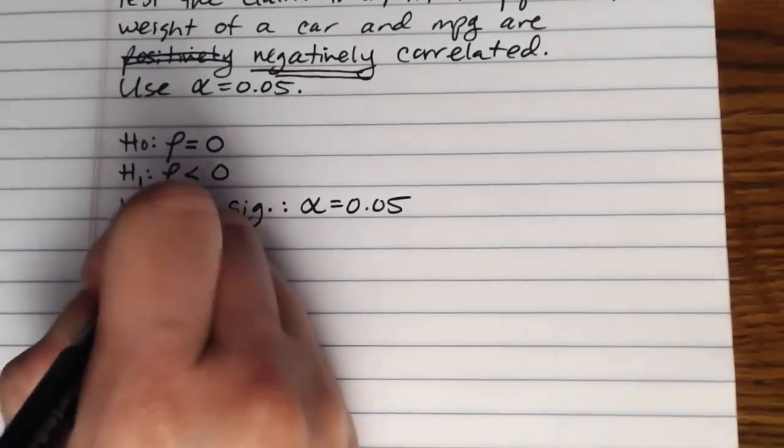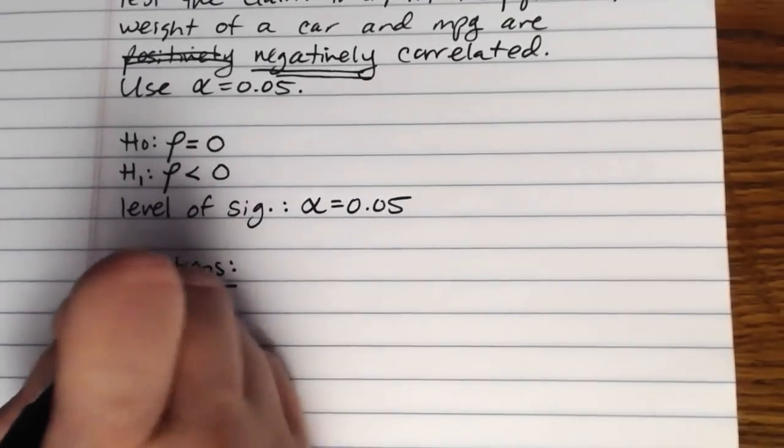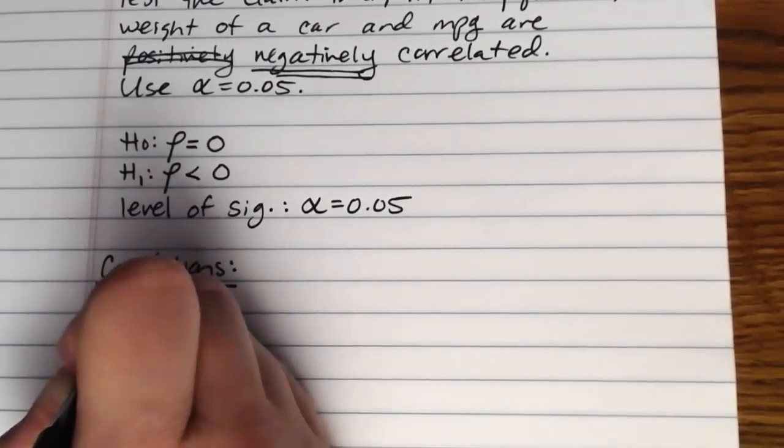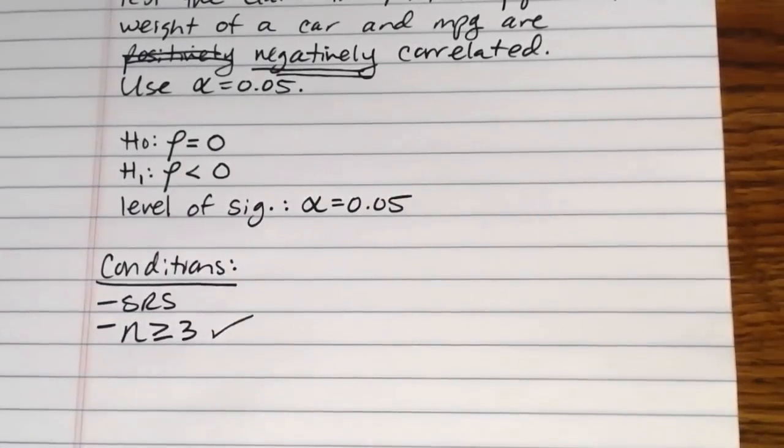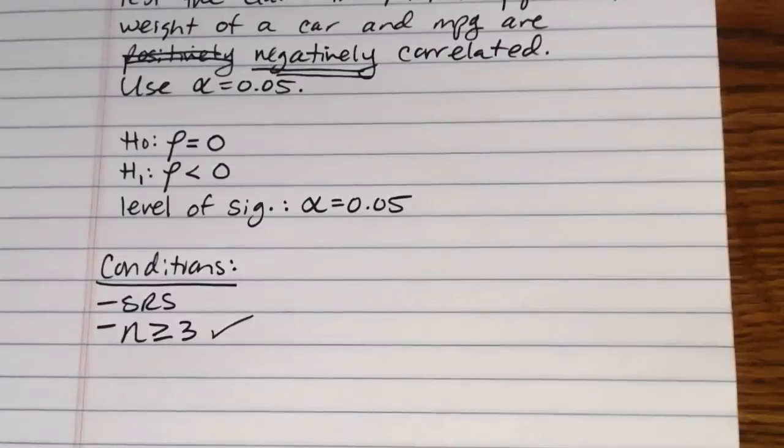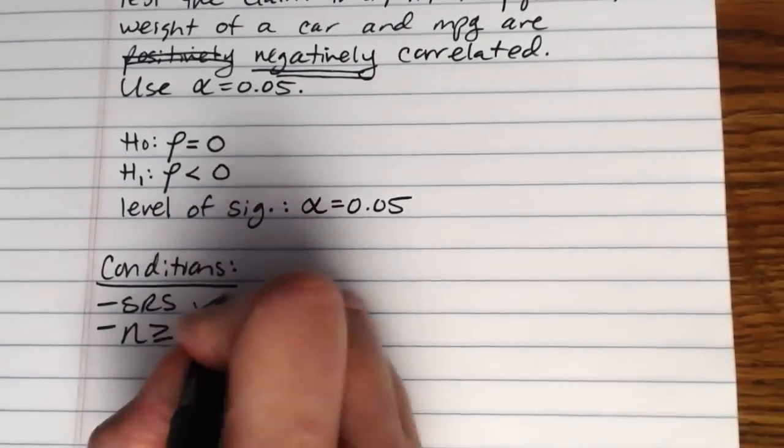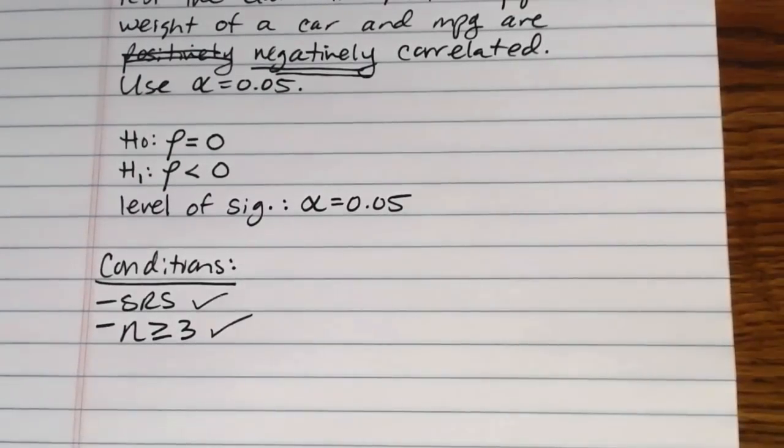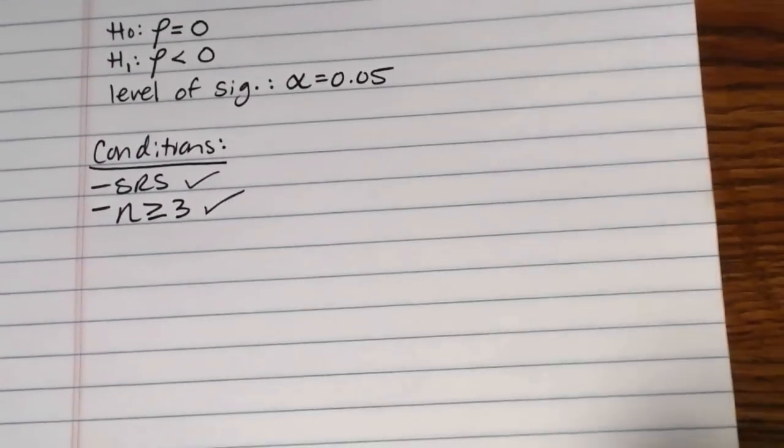Then I need to check my conditions to make sure that they're met. Simple random sample, n greater than or equal to three. This one obviously was met. We had more than three data pairs. And the source data that I took this problem from did indicate that these cars were selected at random. So it is a simple random sample. If we didn't see wording to either of those two effects, we would actually stop here and say that we couldn't do the test. But since our conditions are met, we can go ahead and proceed.